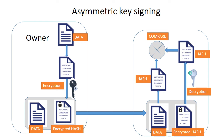This process is called a digital signature. So signing the data using the private key essentially means a hash is created based on the data, and after that anyone else can verify its signature. Verification of the signature is done using the public key. That's how we can tell that we are the owner of this data, and nobody else will create the same hash as we did.